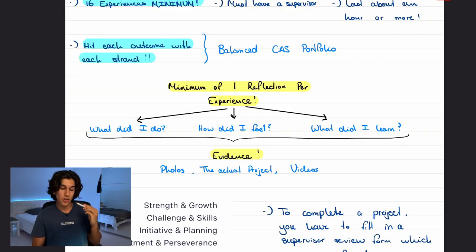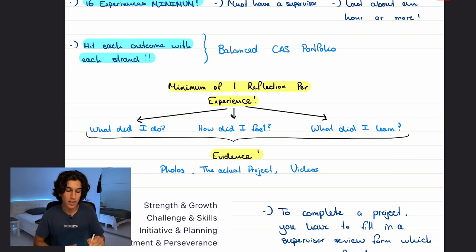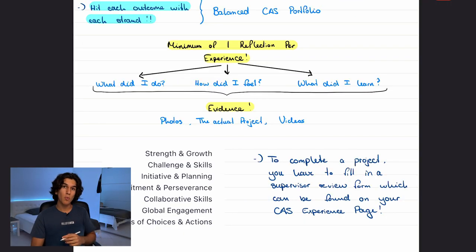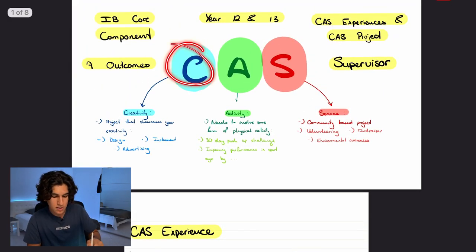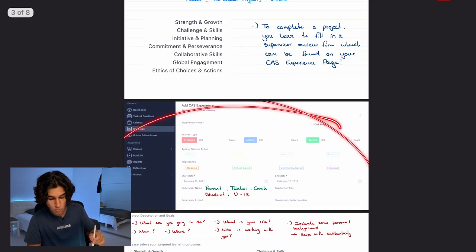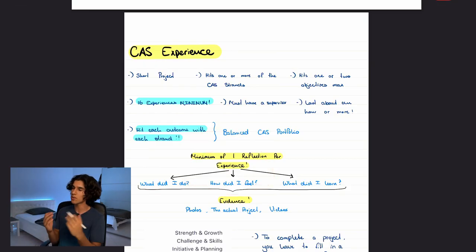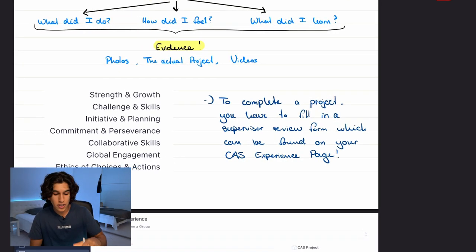For evidence, your supervisor needs to see proof that you did the experience — photos, pictures of your project, videos, anything that proves you completed it. Once you've chosen your experience, strand, objectives, written your description, done your reflections, and answered the CAS questions — which we'll cover soon — you're nearly done.